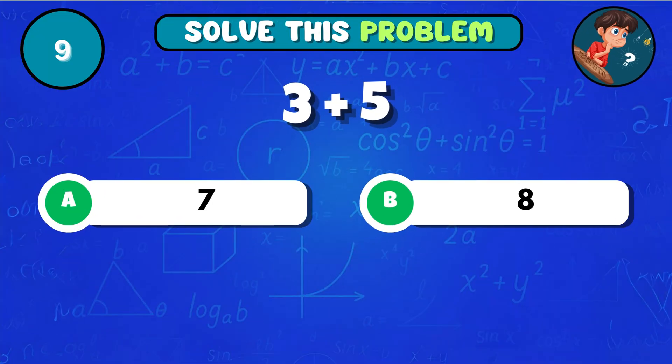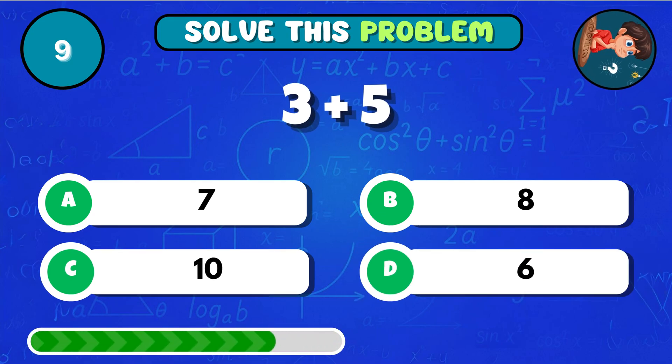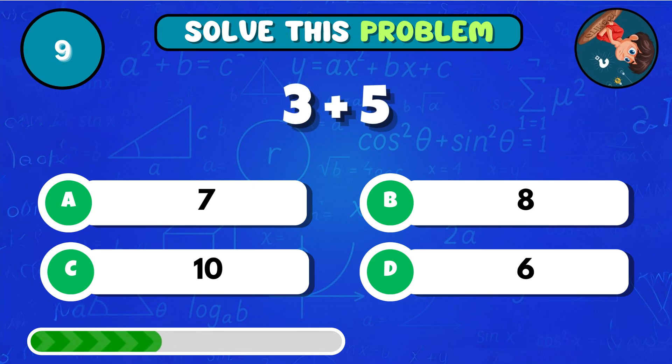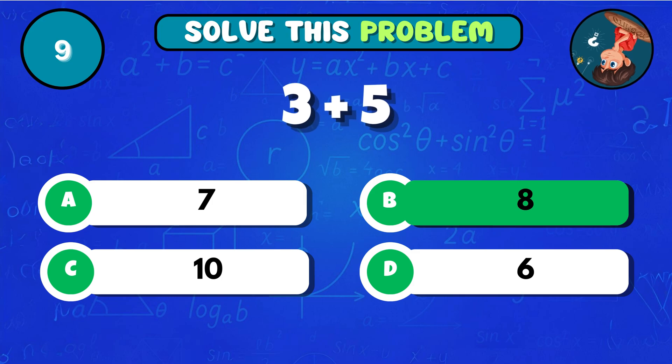How much does 3 added to 5 give you? That equals B 8!